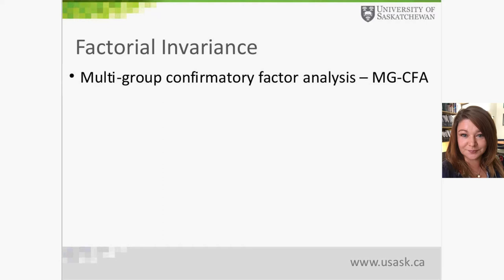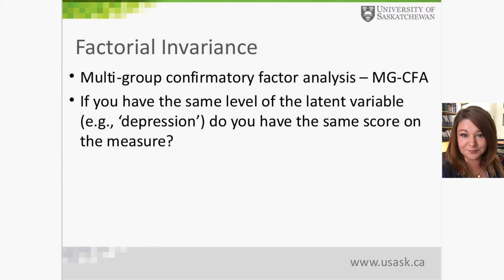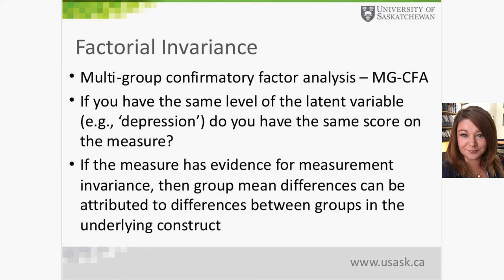Factorial or measurement invariance can be explored with multiple methods. A factor structure approach makes good sense for psychological variables because of the latent nature of measurement. It is typically done using multi-group confirmatory factor analysis (MG-CFA), which is a special case of structural equation modeling. The core question is: if you have the same level of the latent variable — in this case, depression — do you get the same score on the measure across groups?